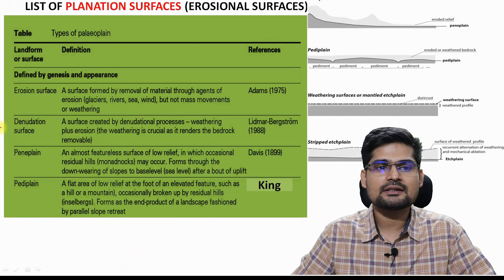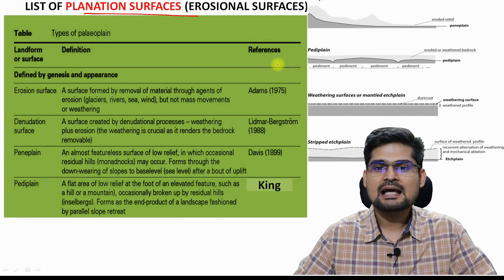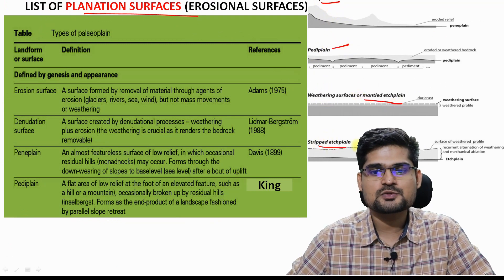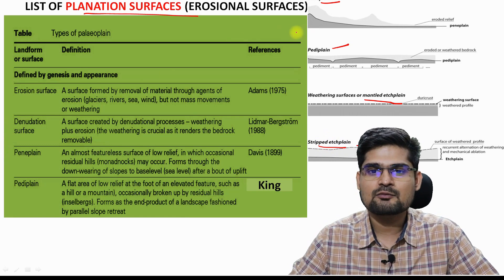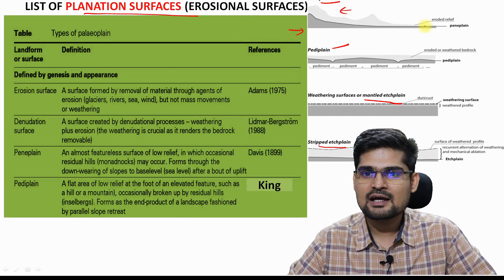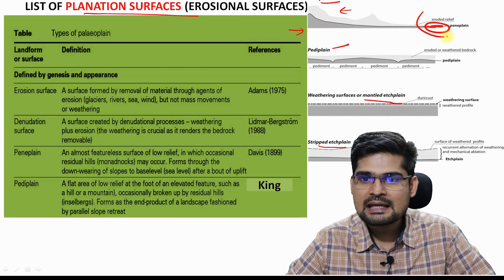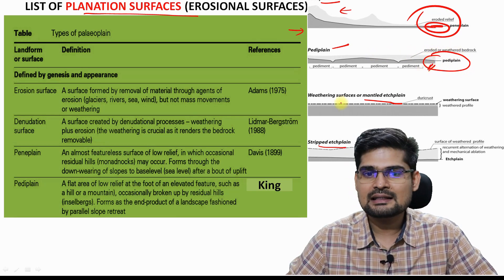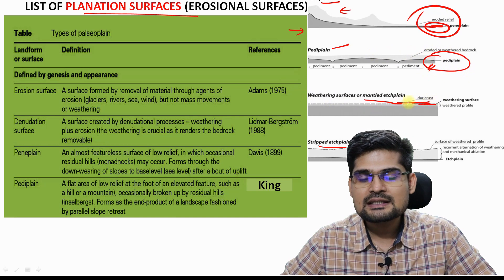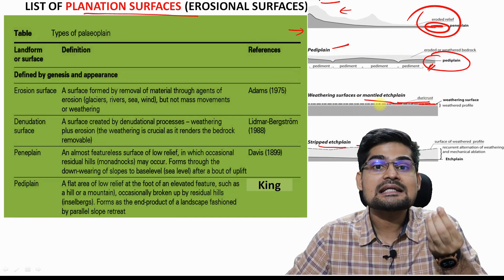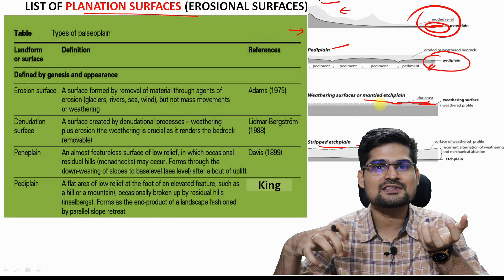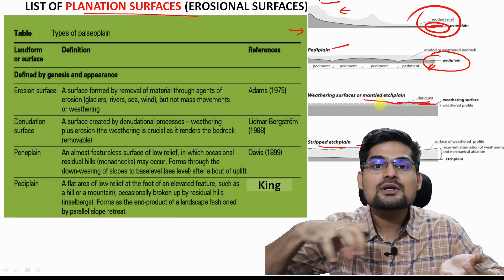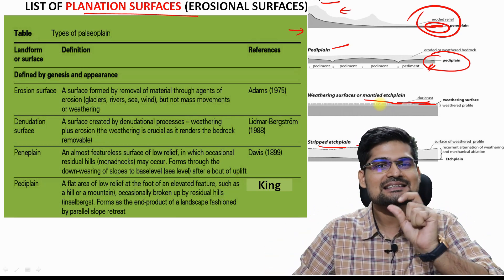There is a list of planation or erosional surfaces with a diagram showing penny plane, pedi plane, weathering surfaces, and stripped H planes. In the penny planation of the Davis model, you have eroded relief and the penny plane at the end stage. In pedi planation, you have a combination of pediments forming plains. H planes involve etching — corrosion or scratching of the surface — such as when a glacier passes over and scratches the surface; these are erosional remnants.